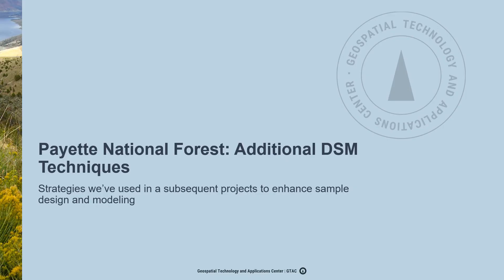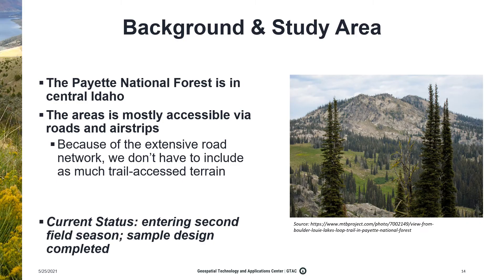Now I'll discuss the Payette project, which follows a very similar workflow to the Bob Marshall, so I'll instead focus on some techniques we used to improve our sample design. In contrast to the Bob Marshall, there are lots of roads as well as some airstrips on the Payette, so access isn't as much of an issue. We can limit the study area to within three and a half kilometers of roads because the road network allows us to access so much area that clipping the AOI to road distance won't remove important variability or soil types. This also means we can be pickier about trail access areas and reduce the amount of hiking needed to visit points.